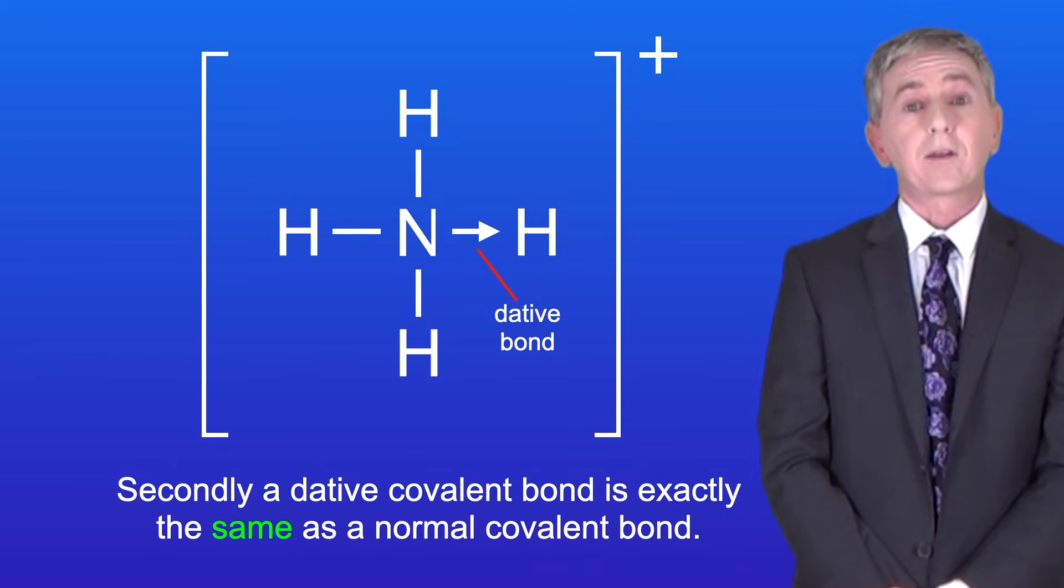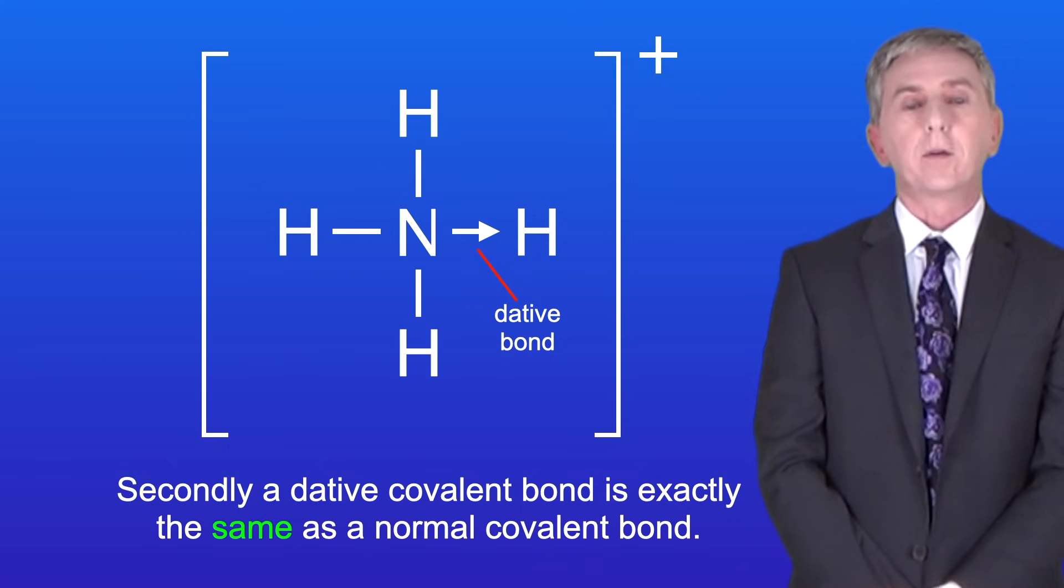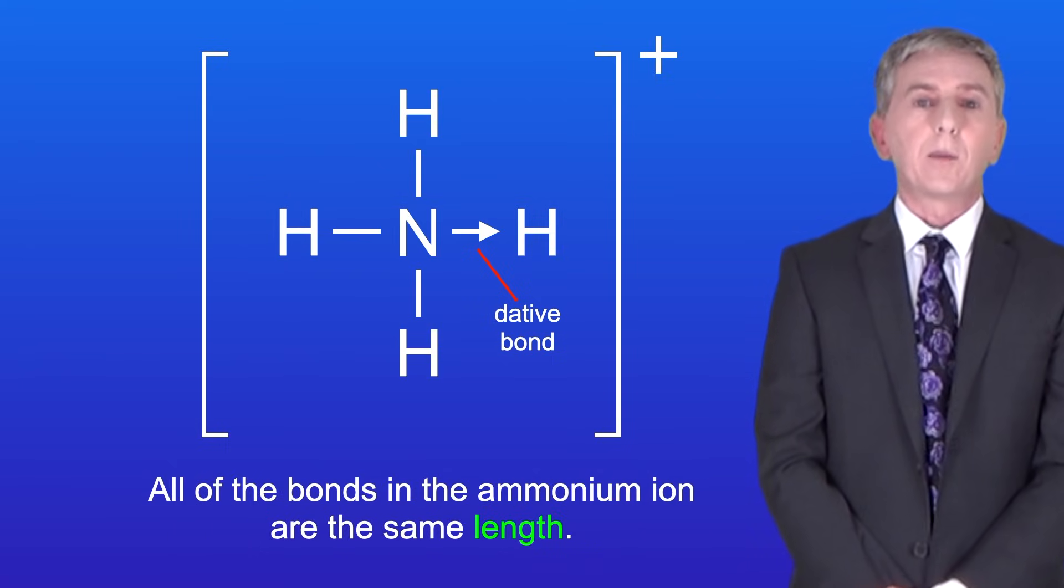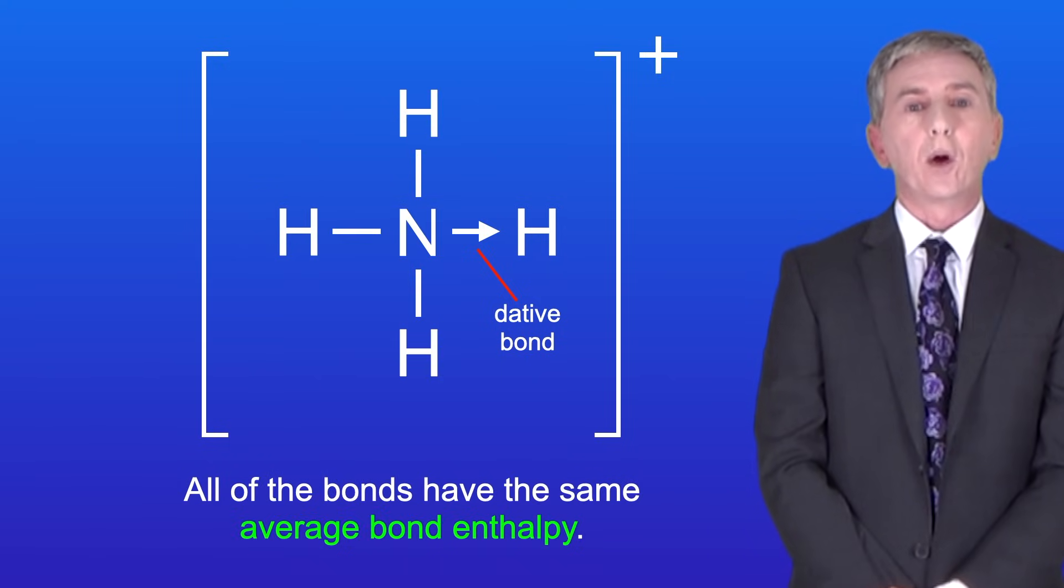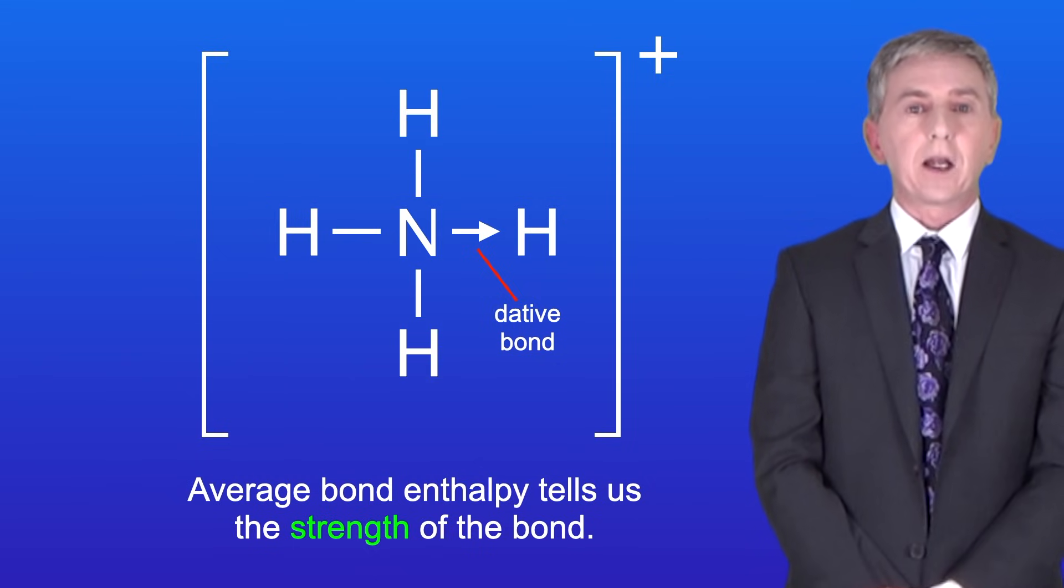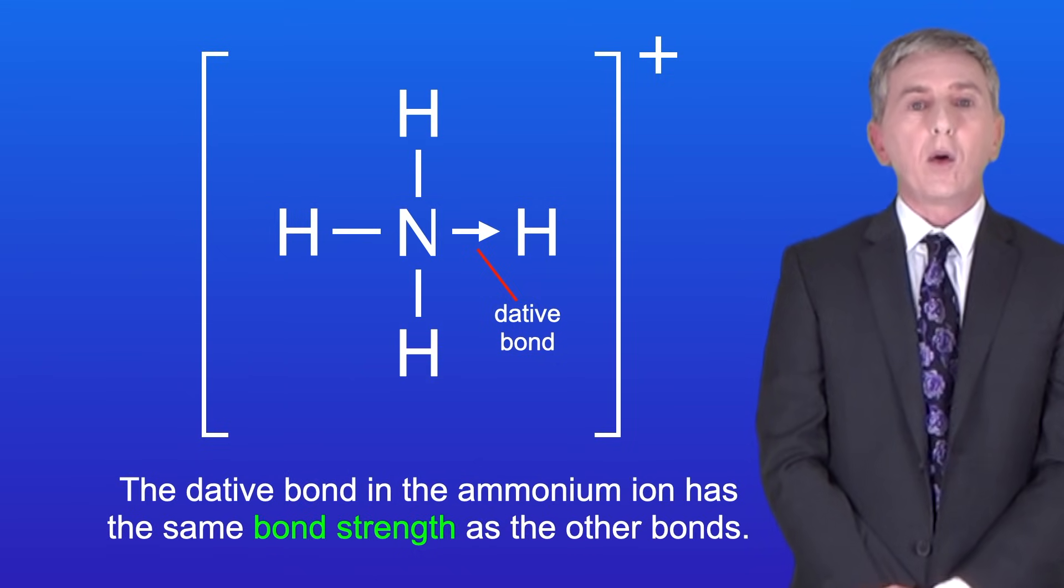Secondly, a dative covalent bond is exactly the same as a normal covalent bond. All of the bonds in the ammonium ion are the same length and all of the bonds have the same average bond enthalpy. Average bond enthalpy tells us the strength of the bond, and the dative bond in the ammonium ion has the same bond strength as the other bonds.